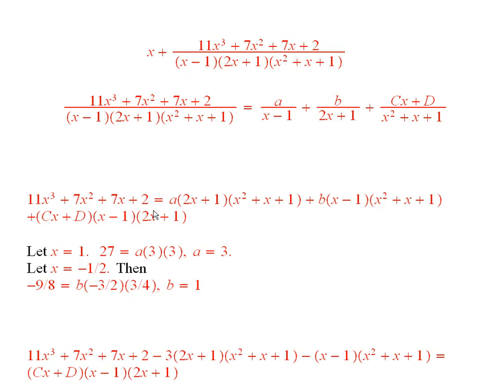Next, plug in x equal to minus 1 half. Then when you do that, you could use synthetic division if you like. You find that on the left you get minus 9 eighths is equal to b times minus 9 eighths. And so b is equal to 1.